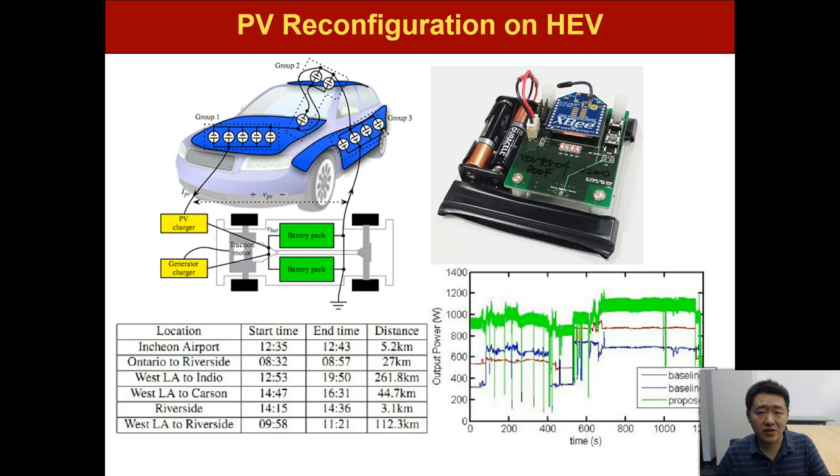We need to measure the solar irradiance at each side of the car and send to the central controller for the reconfiguration management. The top right figure shows the wireless sensor that we have built to measure the solar irradiance.